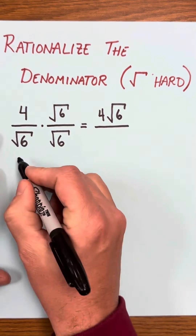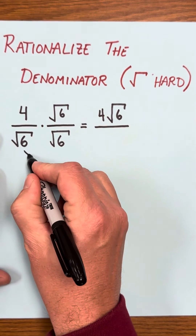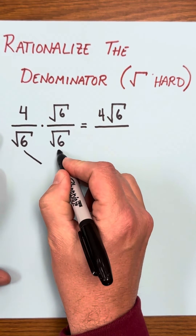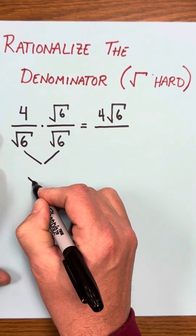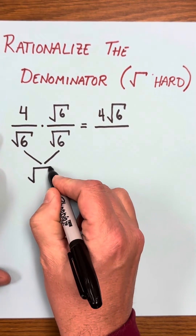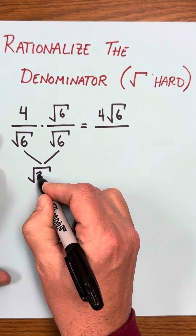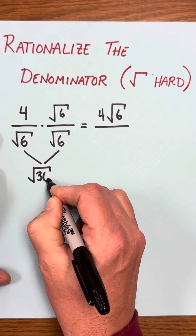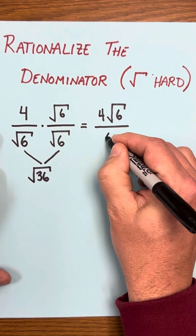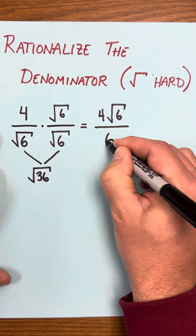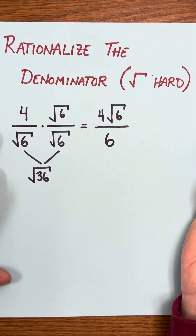The denominator, as you've probably seen previously, the two 6s multiply to make the square root of 36, and the square root of 36 just becomes 6.